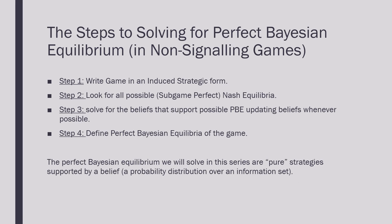The steps I'm going to follow for all four of these examples are as follows: we're going to write our game in an induced strategic form; we're going to look for all possible subgame perfect Nash equilibrium; we're going to solve for the beliefs that support a possible perfect Bayesian equilibrium, updating the beliefs whenever possible; and then we're going to define a perfect Bayesian equilibrium for the game.